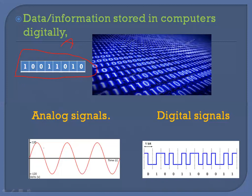Analog signals include all values — all positive values above the horizontal line and all negative values below the horizontal line. Digital signals, on the other hand, are discrete values: only zeros and ones. The presence of a pulse represents one; the absence of a pulse represents zero. So digital signals are combinations of zeros and ones.